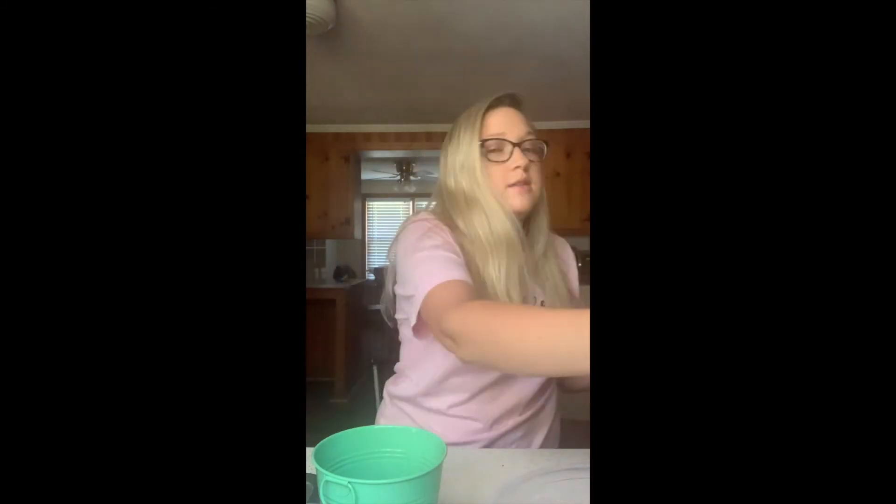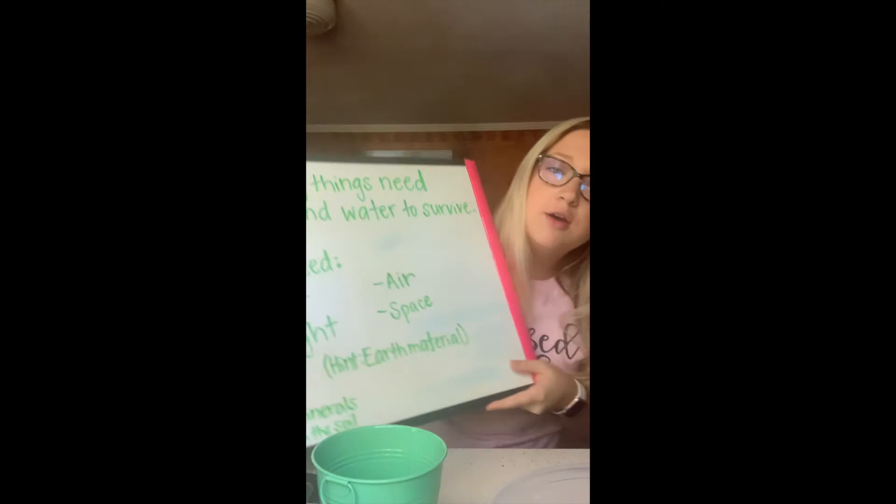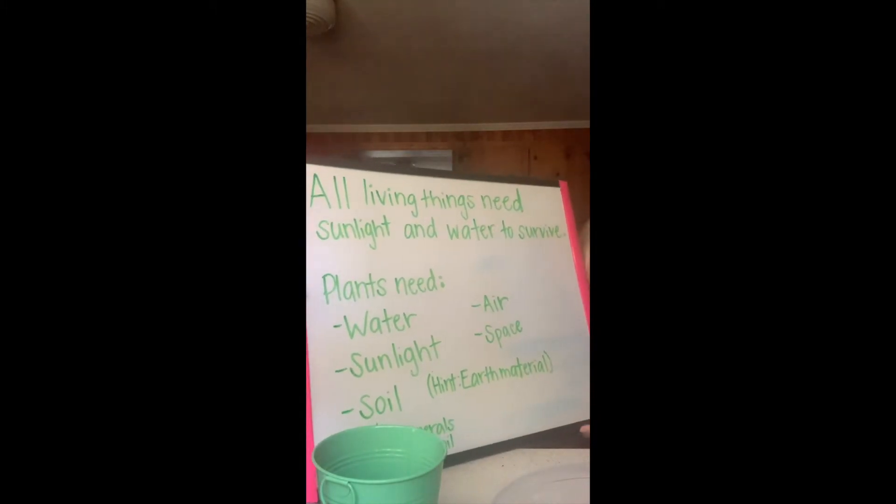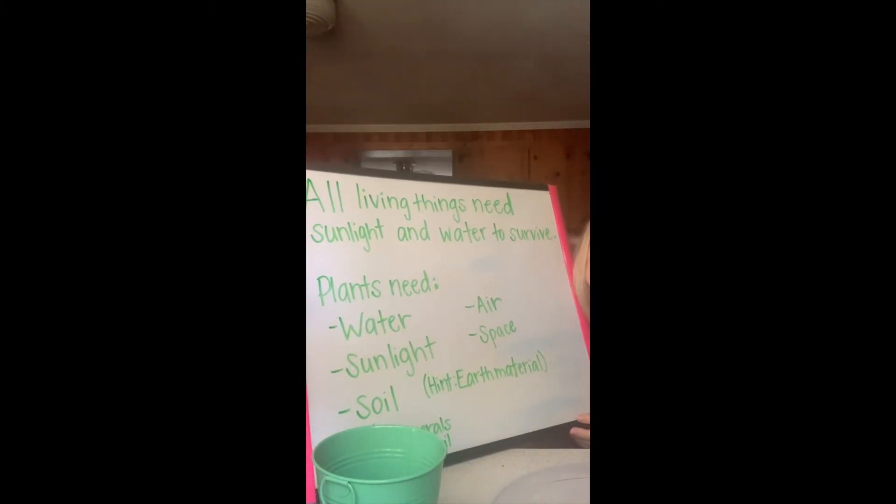There are things that we need for a plant to survive. Let's look at what we needed: water, sunlight, soil, air, and space. Let's see if I have all of those things. We have some water, we have soil, there's some air in here, there's some space, and I'm going to put it right here on the windowsill so that it can get some sunlight.